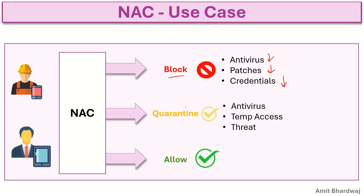The second permission type is quarantine. In this case, non-compliant devices are isolated, allowing limited or restricted access only. This includes antivirus that is not updated, temporary access given to devices for remediation, or a security threat that has been identified — causing the device to be sent into a quarantine zone.